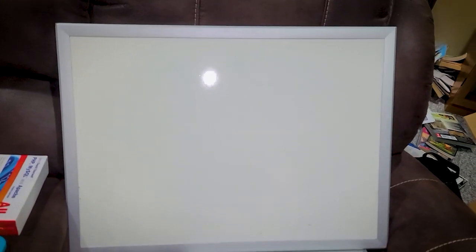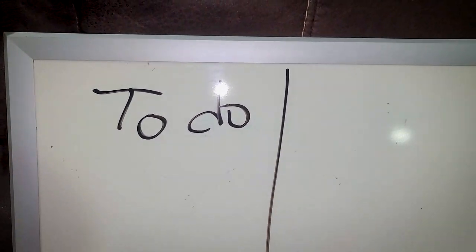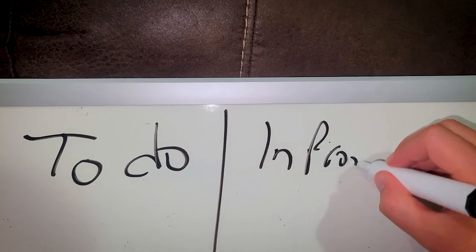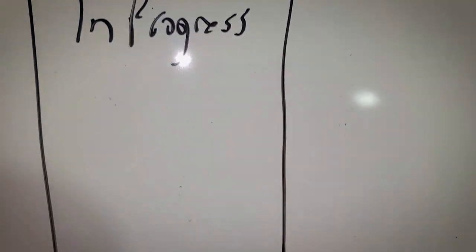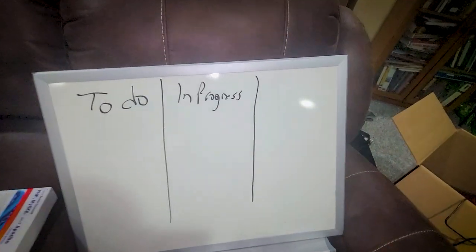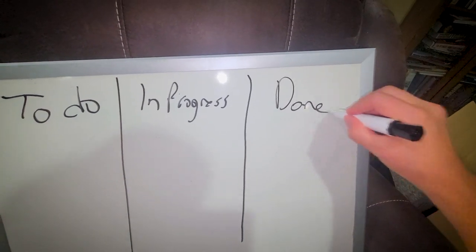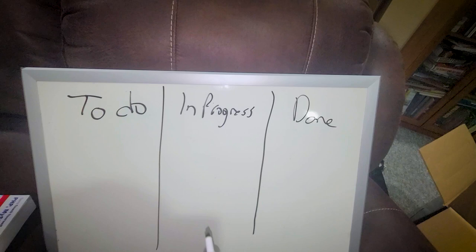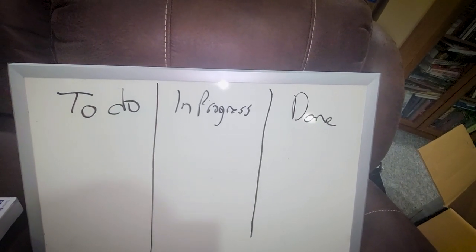So first things first, a blank whiteboard. I'm going to make three columns: To-do, In Progress, and finally a Done column. These are the three states that our stories or our post-it notes can be in.